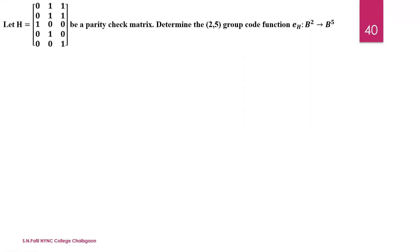Hello everyone, my name is S.N. Patil. In this video lecture, we will discuss a problem on group code. Here we have the parity check matrix, and the question is: determine the (2,5) group code. The encoding function is given from B raised to 2 to B raised to 5. Now let us start the solution of the problem.